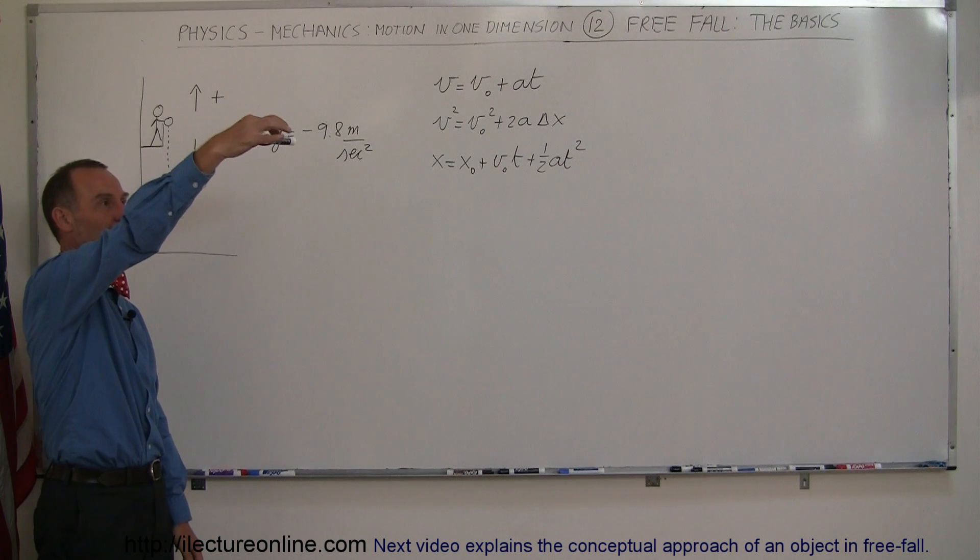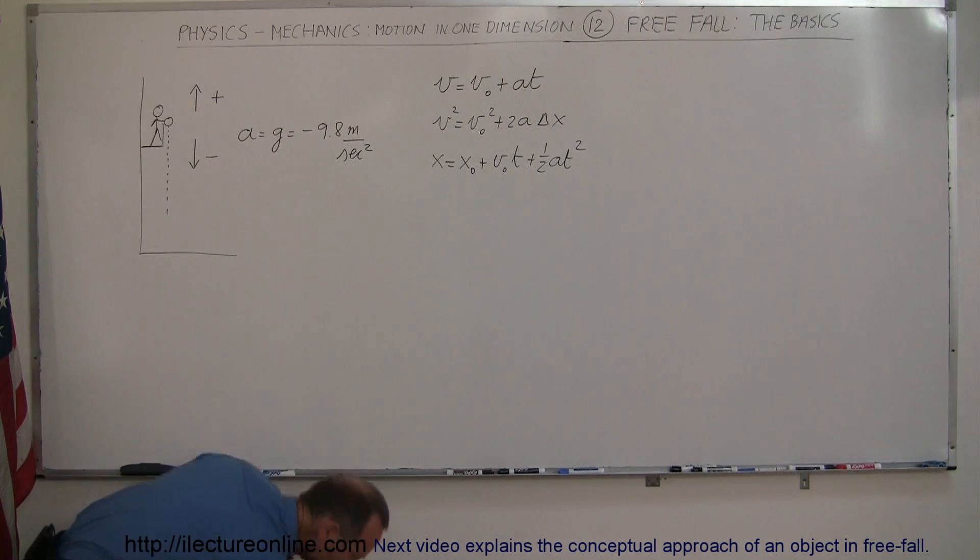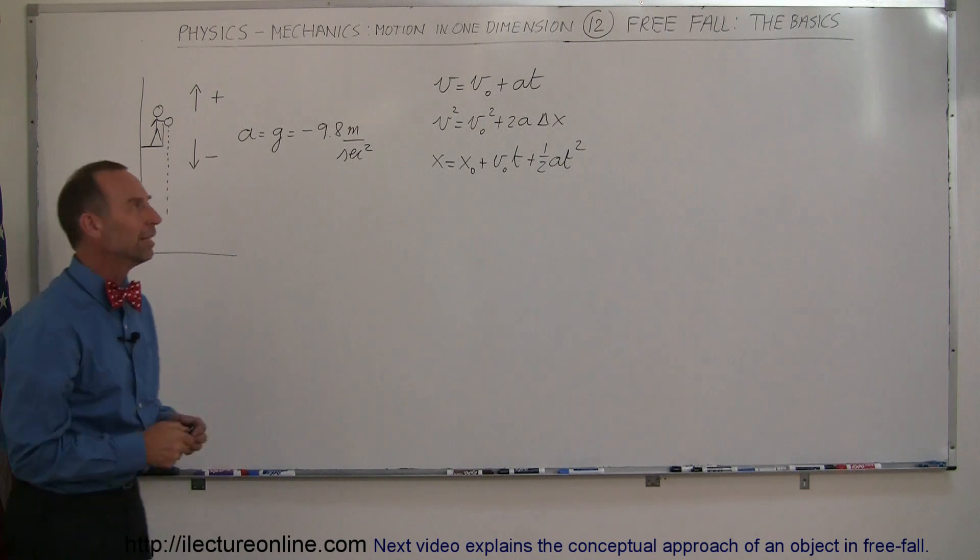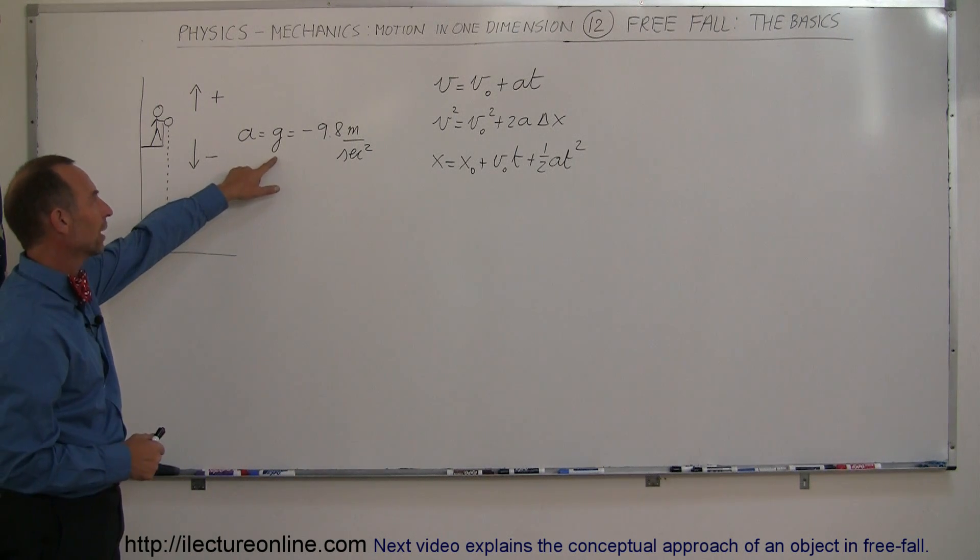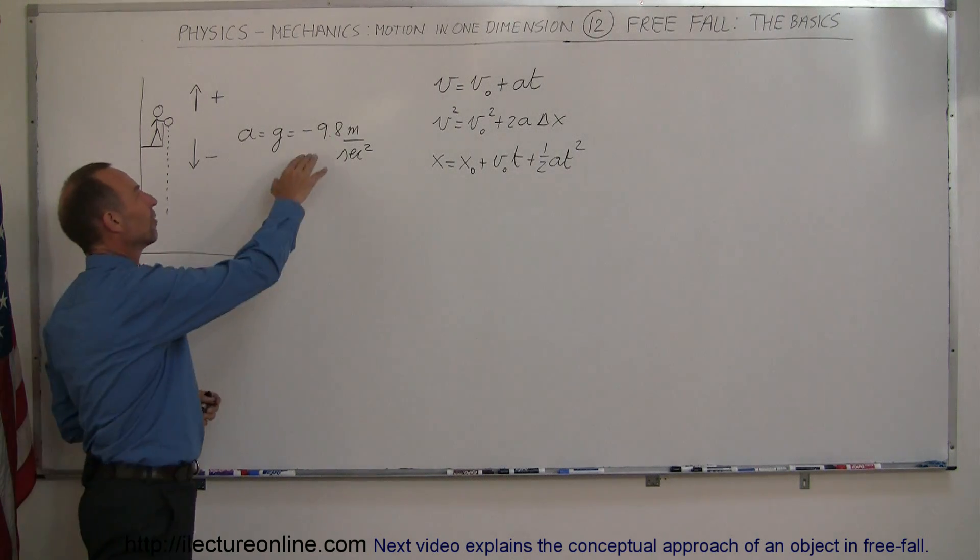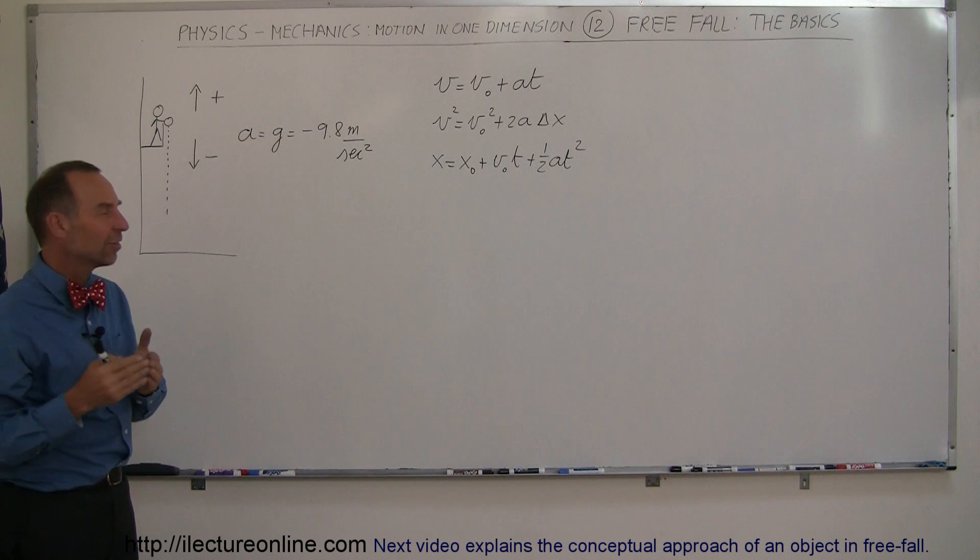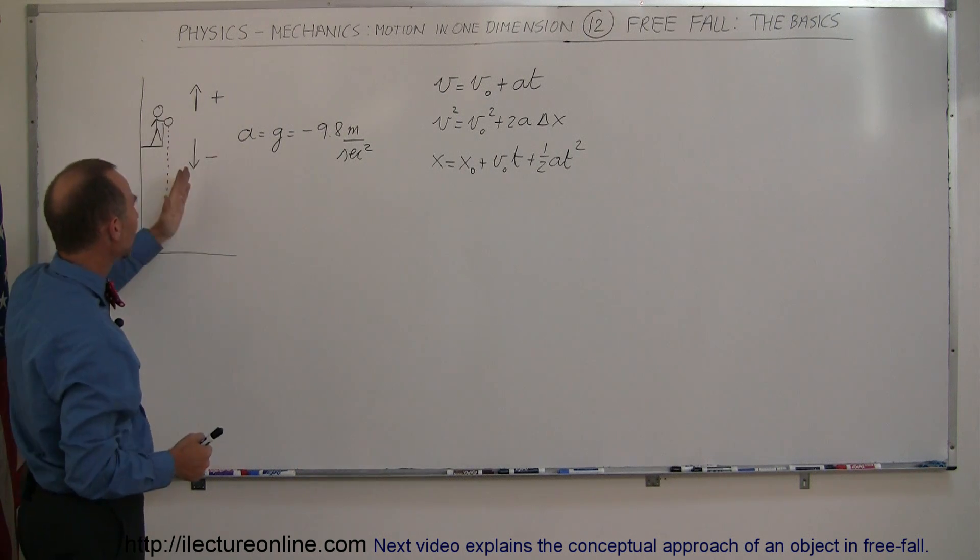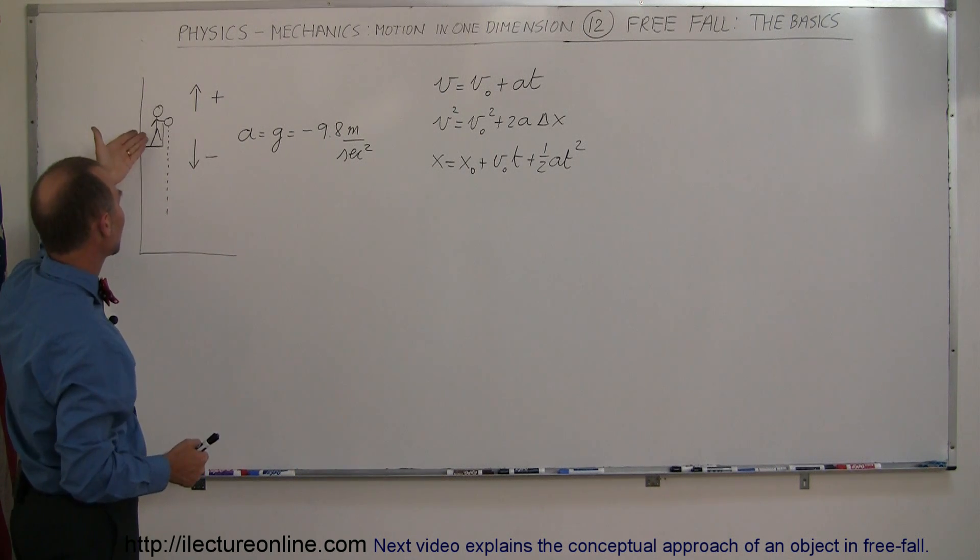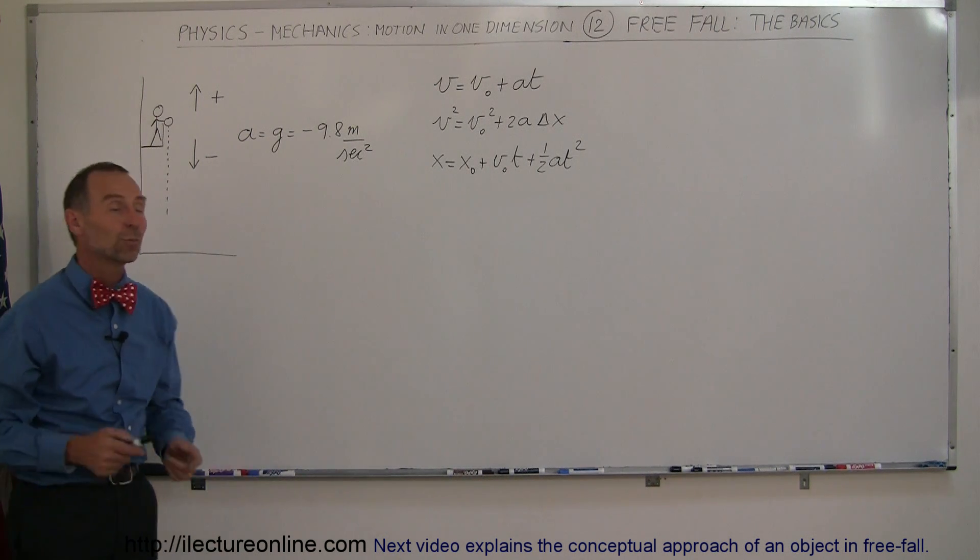Anytime a person drops an object, it accelerates downward at what we call the acceleration due to gravity, which we use the letter G to express, small letter G, and in metric units it's minus 9.8 meters per second squared. Why do we call it minus? Because by definition down is negative and up is positive. So here we have a person dropping an object. It accelerates downward at the acceleration of minus 9.8 meters per second squared.